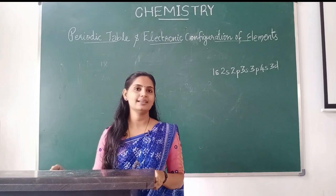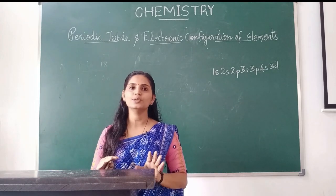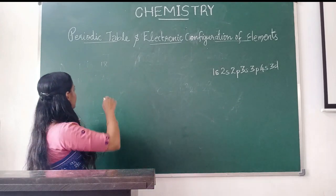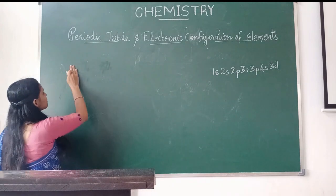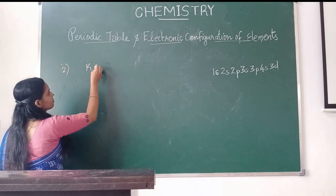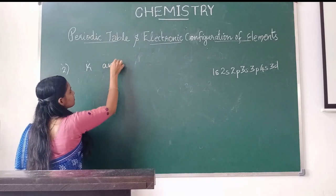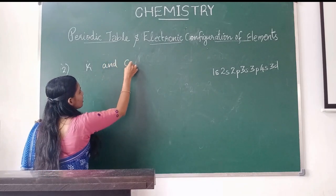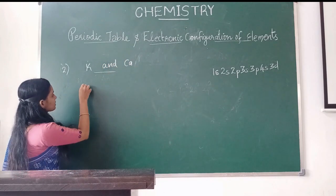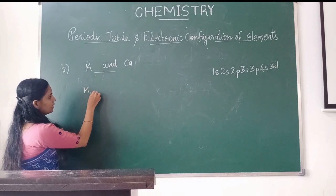The second category is potassium and calcium. Potassium has atomic number 19.